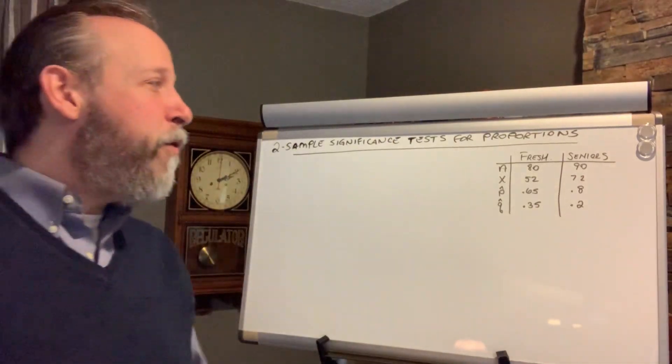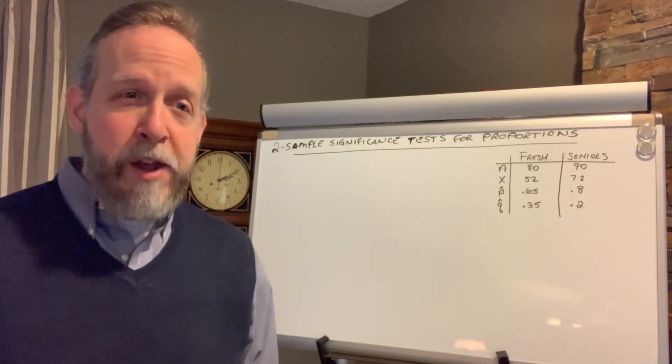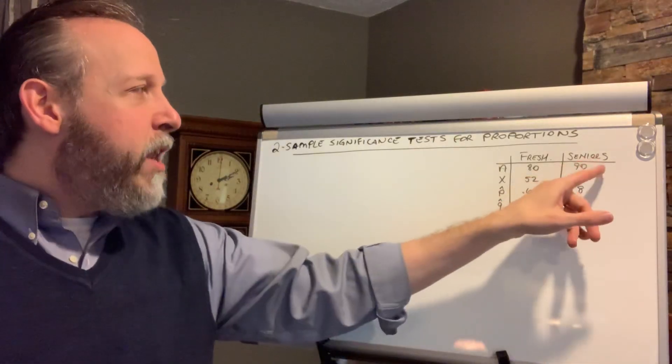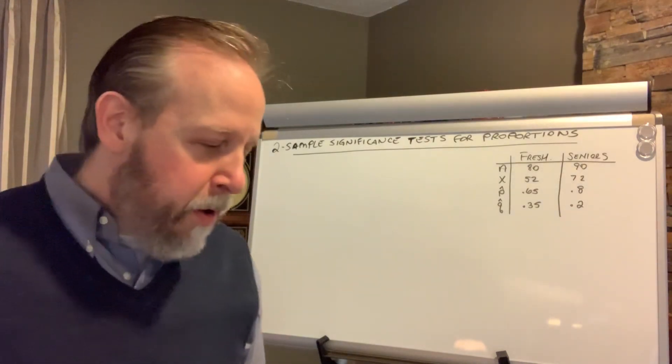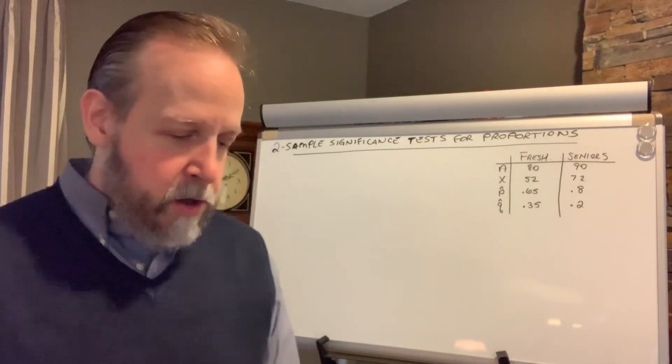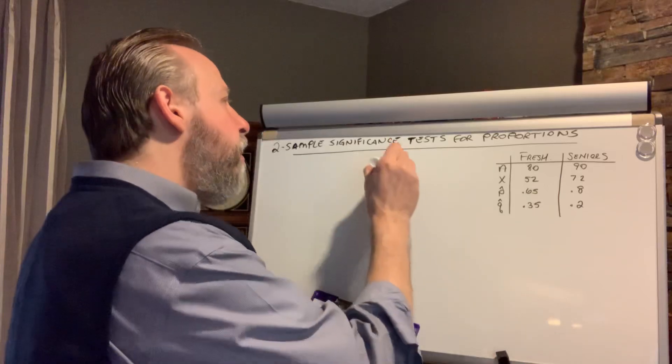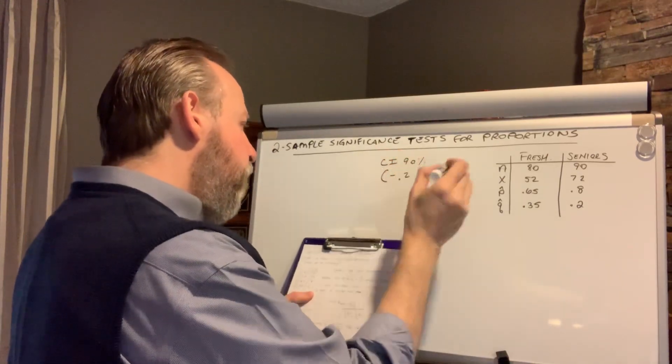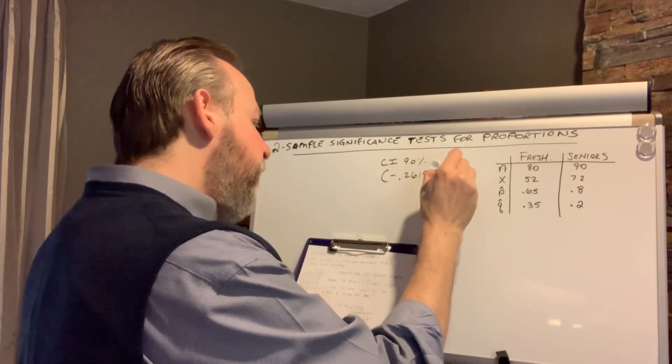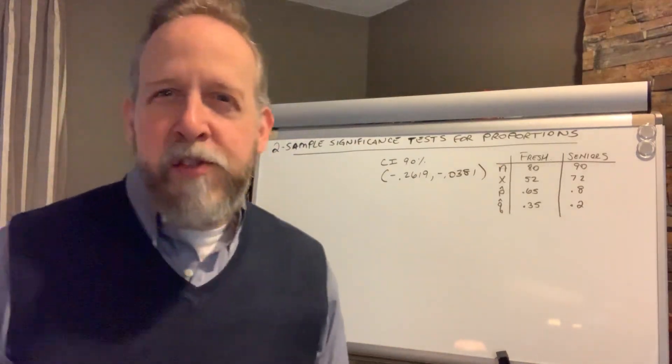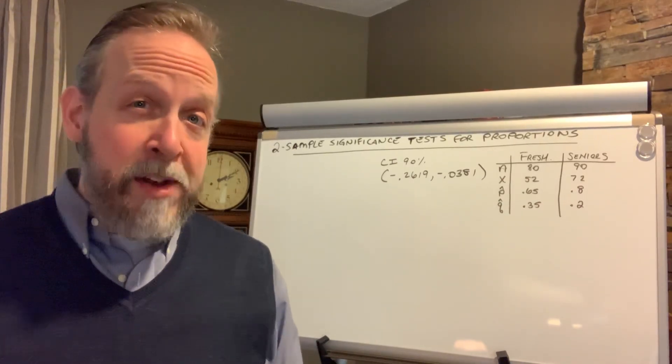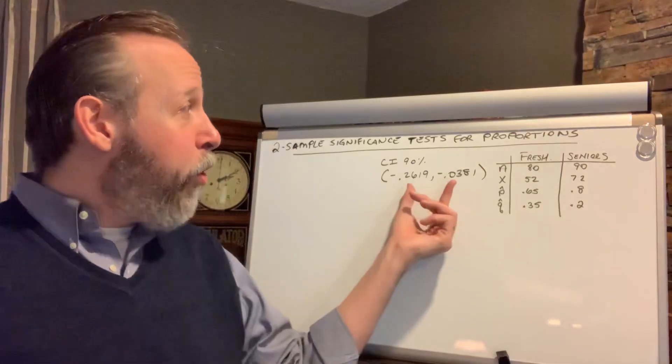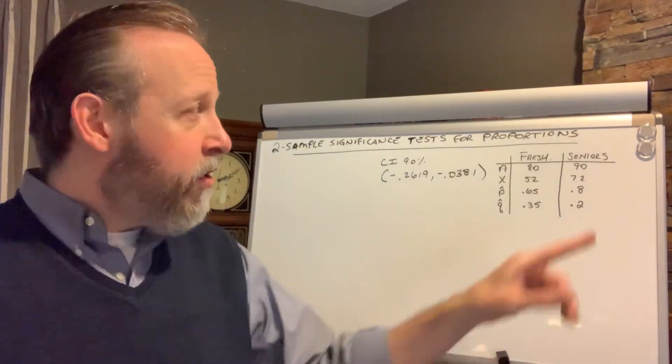We're going to start off by using the same information that we left off with yesterday. We covered another example of the two-sample confidence interval for proportions. Here we have 80 freshmen and 52 liked the online learning program. We have 90 seniors and 72 of them liked the online learning program. We came up with a 90 percent confidence interval which was entirely negative at negative 0.2619 to negative 0.0381. An entirely negative confidence interval gave us pretty good evidence that the seniors liked the program better than the freshmen.